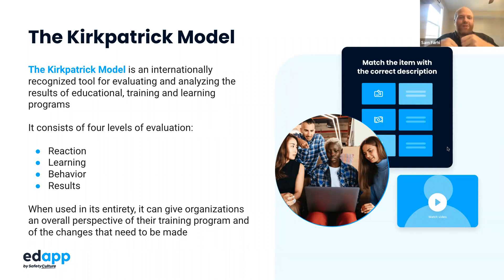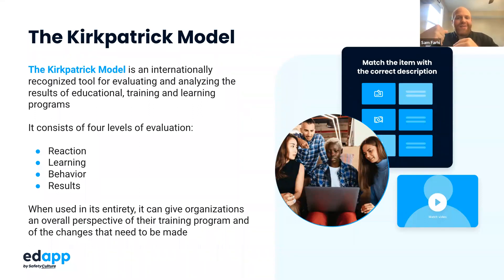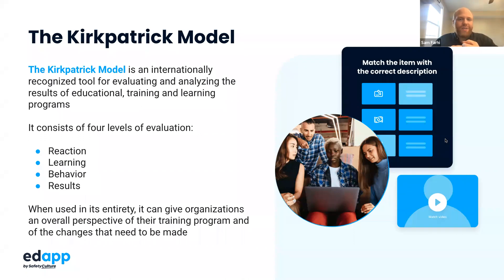The second step is learning. This happens in many different ways — micro lessons and group training fall here — and this is where your analytics happen. You can see if people are doing well. But to see if the learning is really taking hold, you look at the third step: behavior. Most training — 90% or more — is about whether it creates a behavioral change. When an employee is out in the field, are they doing something better? Did that learning translate into real life?